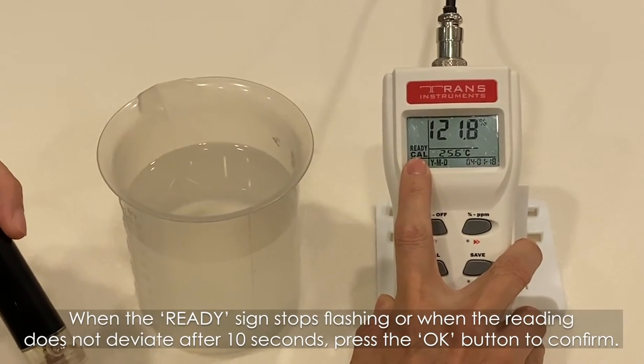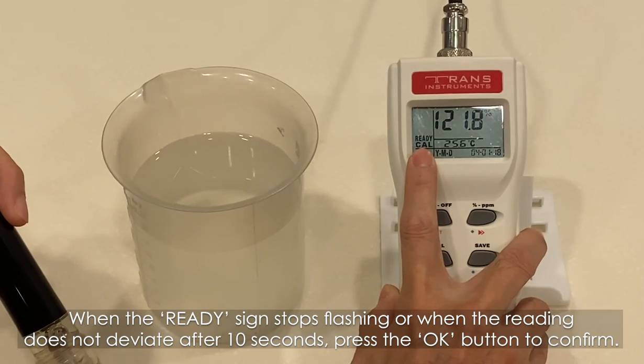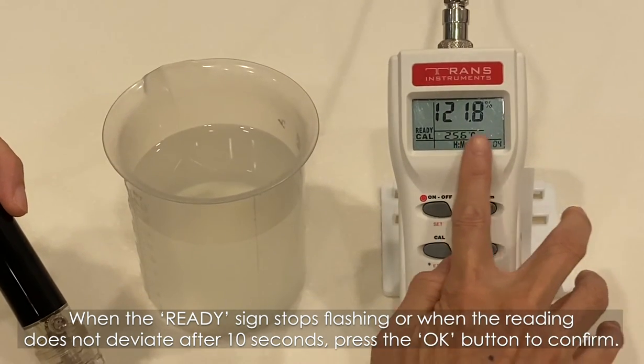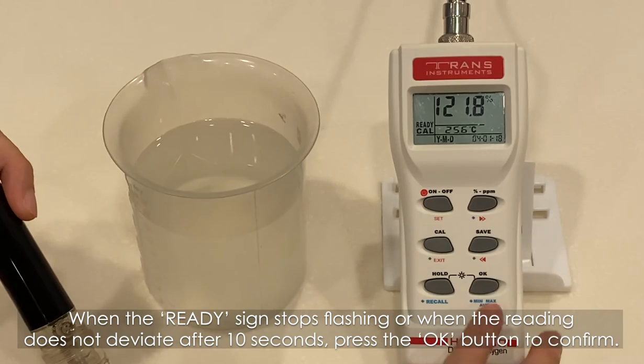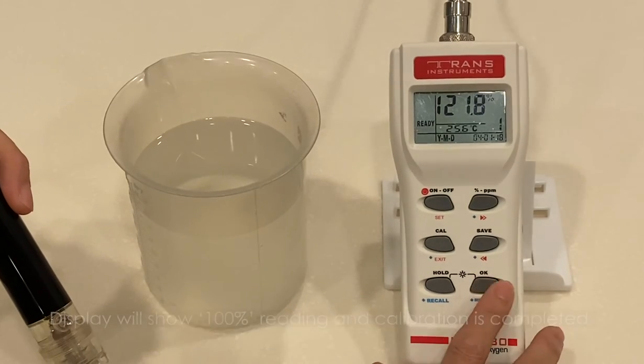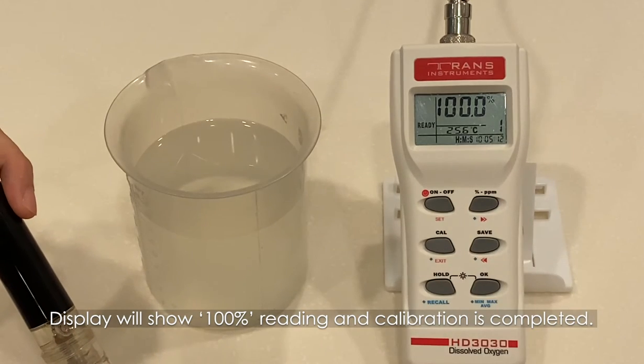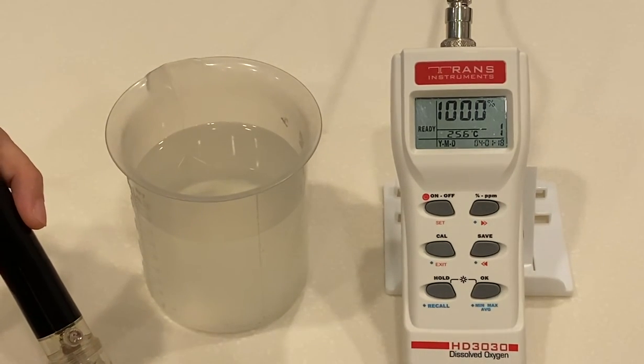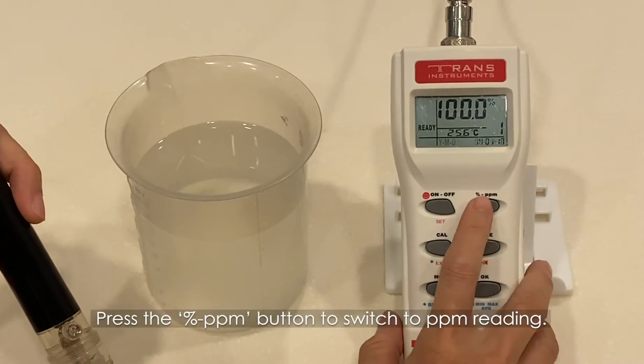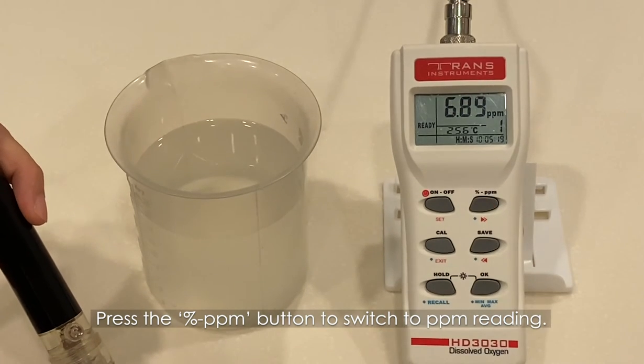When the ready sign stops flashing or when the reading does not deviate after 10 seconds, press the OK button to confirm. Display will show 100% reading and calibration is complete. Press the percentage PPM button to switch PPM reading.